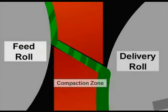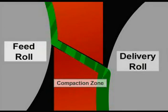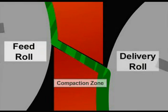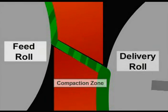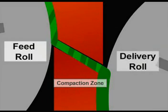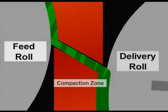When the fabric hits the surface of the heated shoe, the fabric slows, shortens, and compacts, based on the surface friction in the compaction zone.